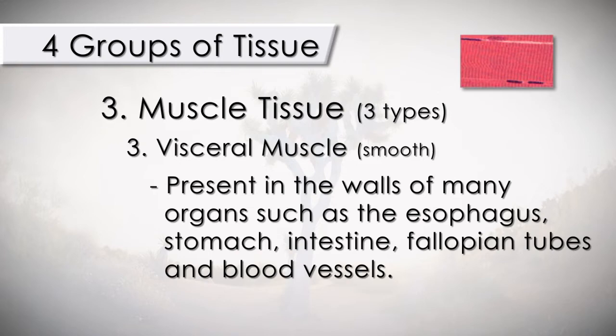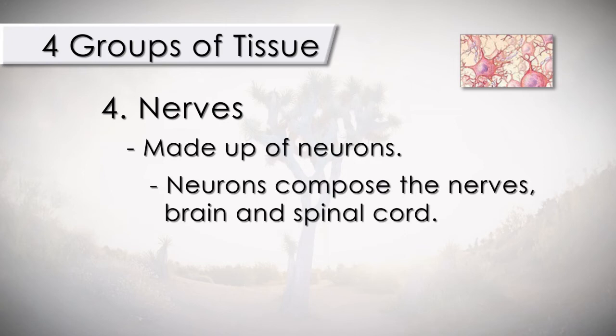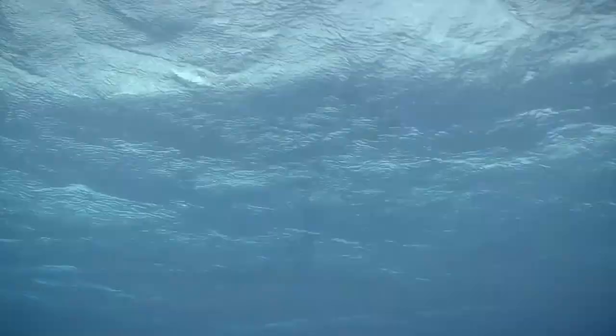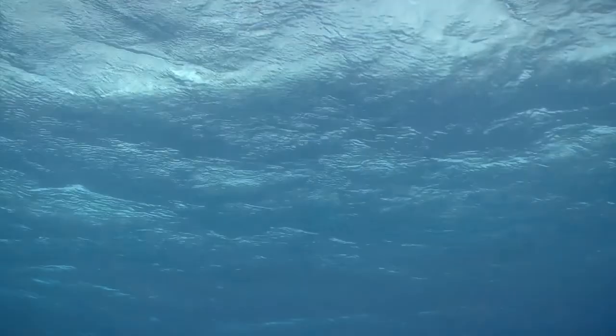The fourth main group of tissues are the nerves. Nerves are made up of neurons; these neurons compose the nerves, brain, and spinal cord. The main function is to transmit messages throughout the body. Here's one last interesting fact about tissues: they are 60 to 90 percent water, and water plays a role in all of the body systems.